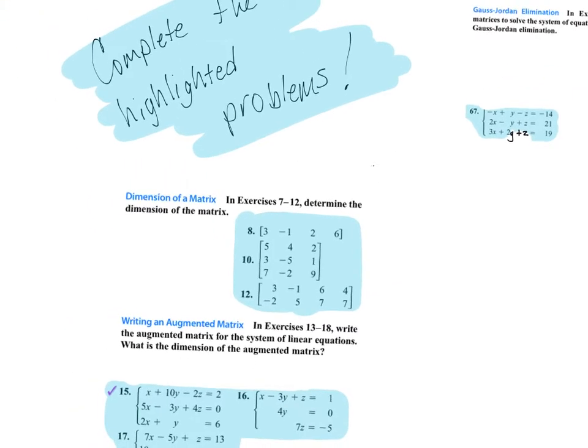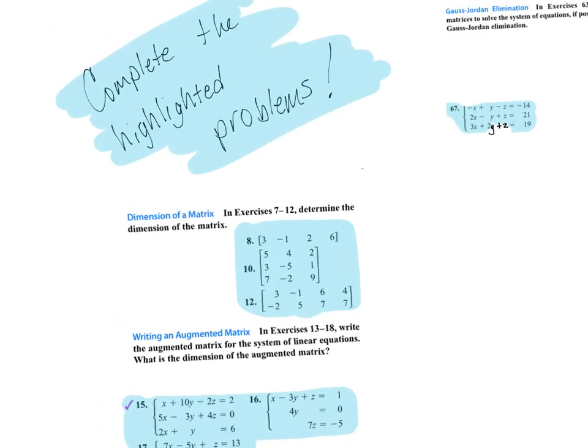Your quiz is only on section 7.4. There are five questions, and four of the five questions will have absolutely zero partial credit — either right or wrong.